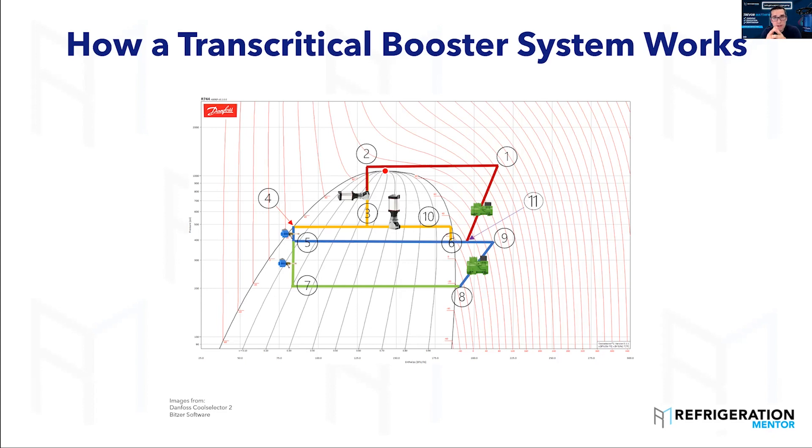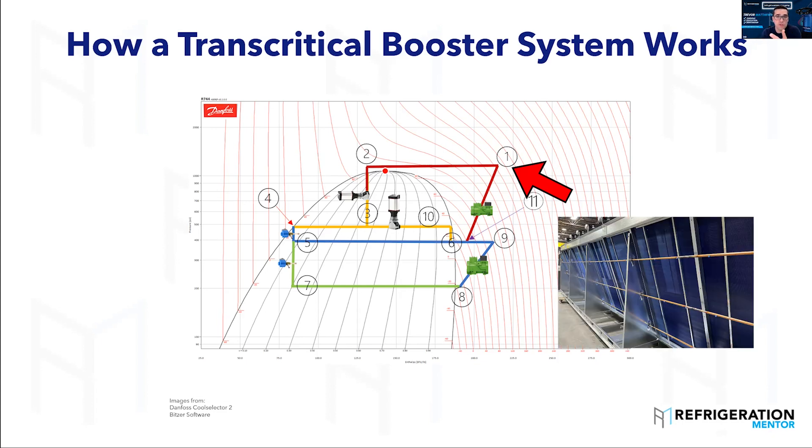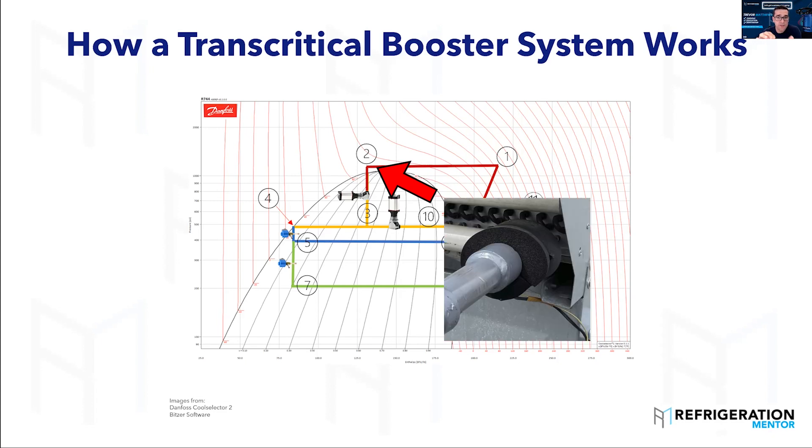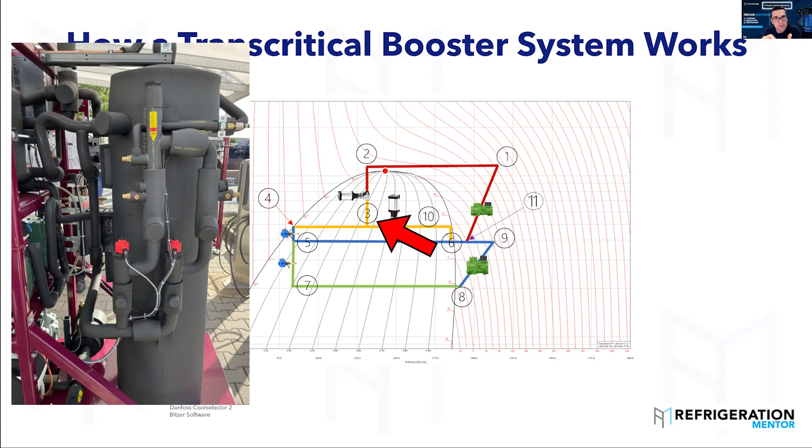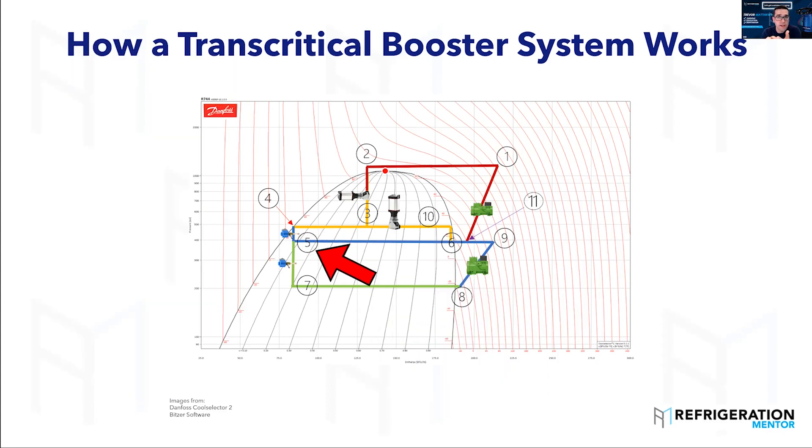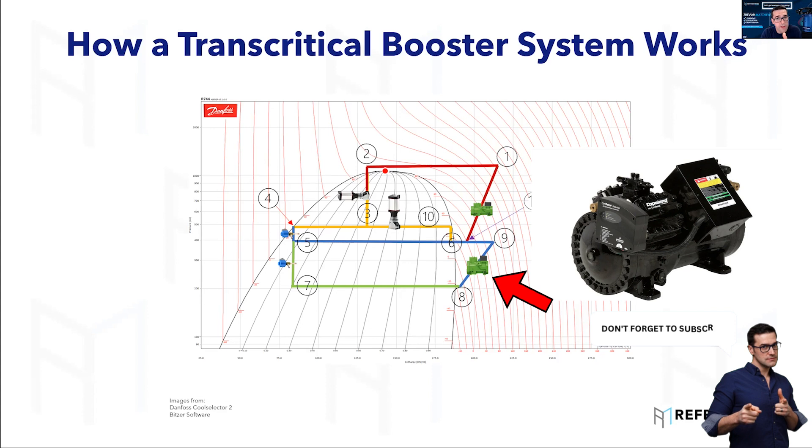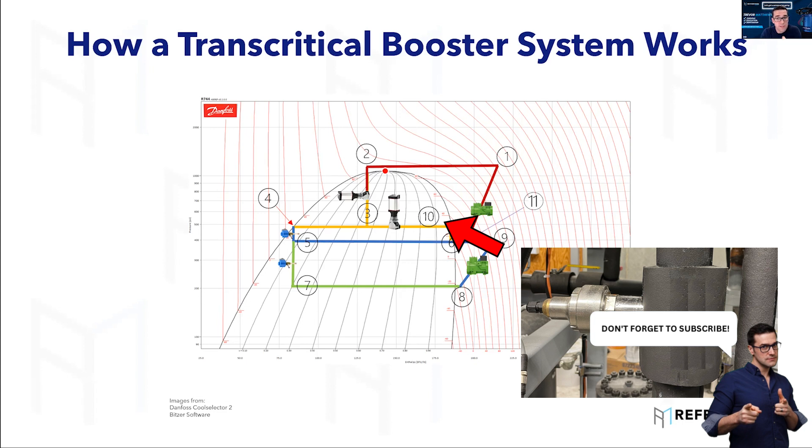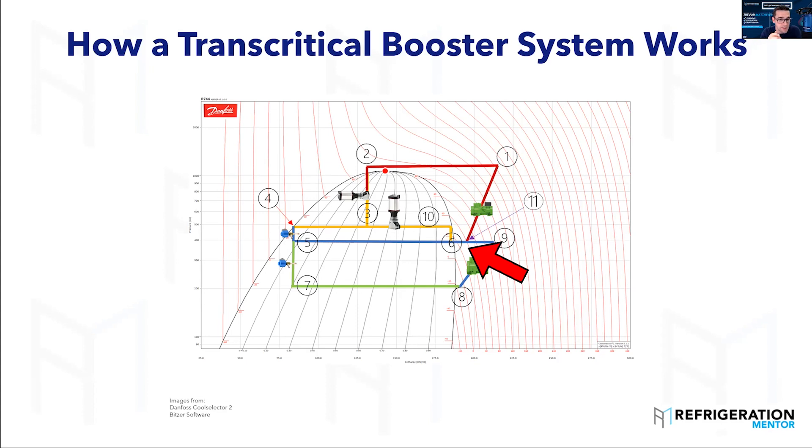And this is it. This is the step. This is how a transcritical booster system works. If you want to plot it again, for those who are listening, you have that medium-temp discharge. It goes up to your 0.1. Through your gas cooler condenser, outlet of that gas cooler condenser is 0.2. When you drop through the high-pressure valve, that is 0.3. Out of the liquid flash tank or receiver, you go to 0.4. That's the inlet of your metering device. 0.5 is the inlet of the evaporator. 0.6 is the outlet of the evaporator. 0.7 is the inlet of the low-temp evaporator. And 0.8 is the outlet of the low-temp evaporator. 0.9 is the discharge of the low-temp compressors. 0.10 is the flash gas bypass line. And 0.11 is all three lines together.